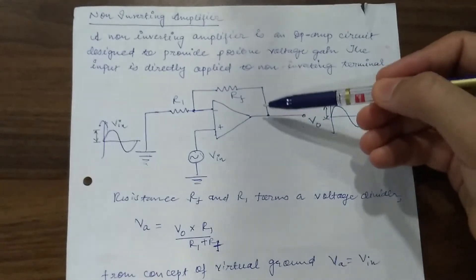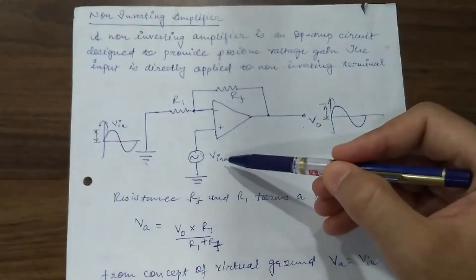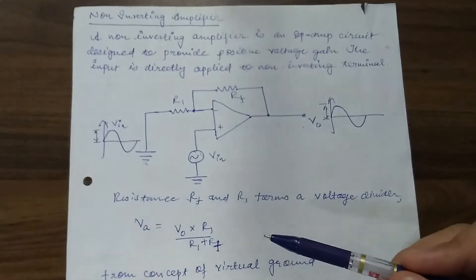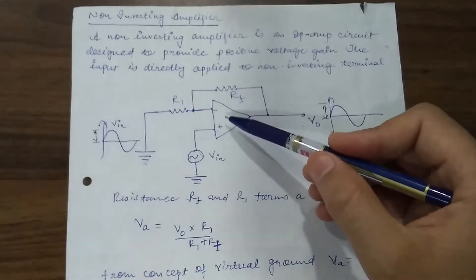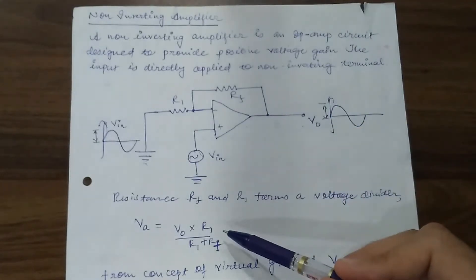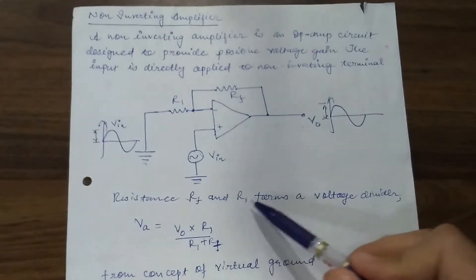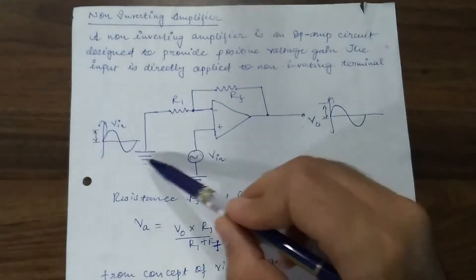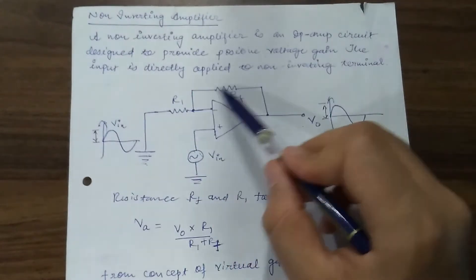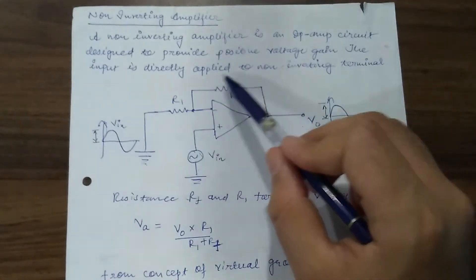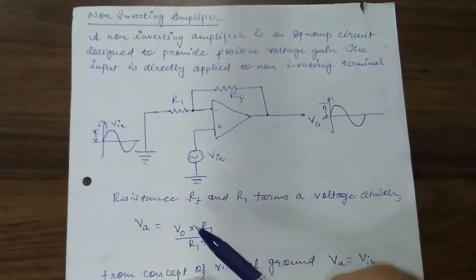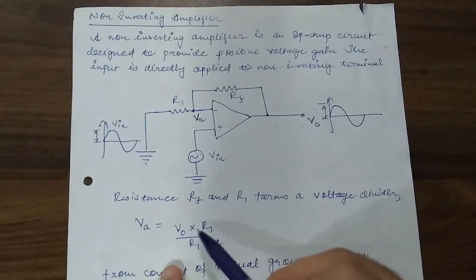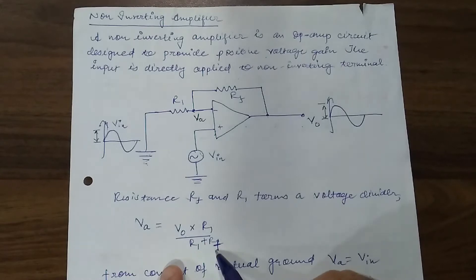The feedback resistance RF, the resistance R1, and the input voltage are the three elements of this non-inverting amplifier. If we want to simplify this circuit using mathematical equations, you can see that RF and R1 form a voltage divider. The total voltage between these two terminals is divided into two parts: R1 and RF. So the voltage VA is equals to VO multiplied by R1 divided by R1 plus RF.